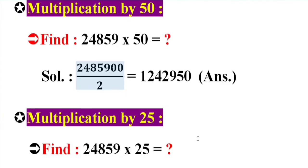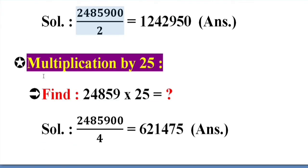Multiplication by 25. Find 24859 into 25 equal what? Solution: 2485900 by 4 equal 621475. Answer.